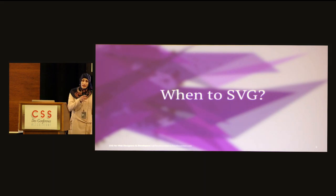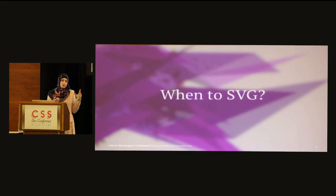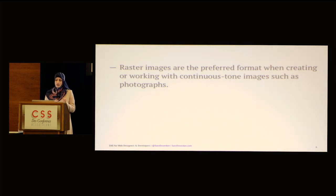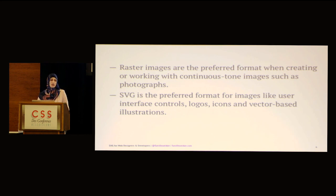SVG is an image format and a document — an XML document format — so it can do more than just display images. If you are going to display an image and you're not sure how to choose the image format, there is a rule of thumb I always follow. Raster images are the preferred format for continuous tone images such as photographs. SVG is the preferred format for user interface controls, logos, icons, and vector-based illustrations.